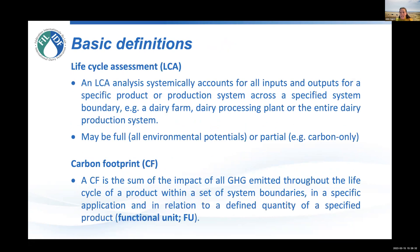When we talk about life cycle assessment, it's a whole system analysis that systematically accounts for all inputs and all outputs for a specific product or production system across a specified system boundary — for example, a dairy farm, a processing plant, or the entire production system and chain. It can be looking at everything: eutrophication, acidification, carbon — or it may just be partial. For the purposes of this guide, we're only talking about carbon and greenhouse gases.